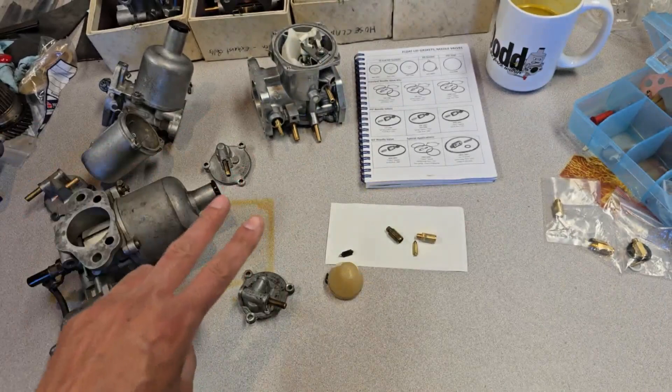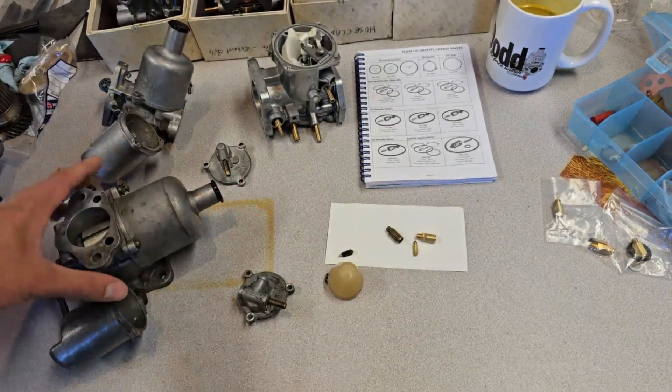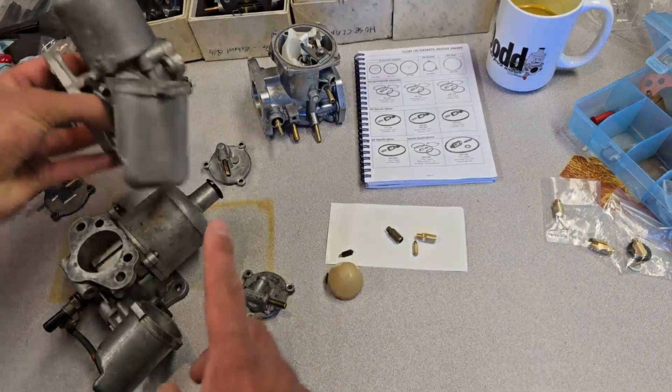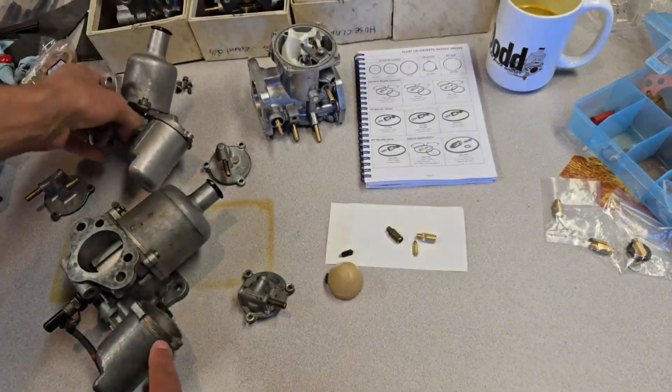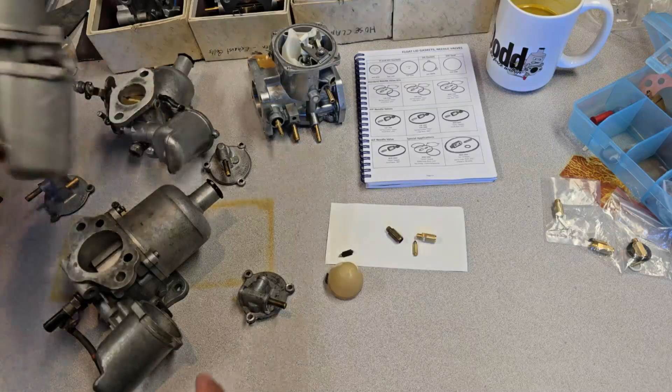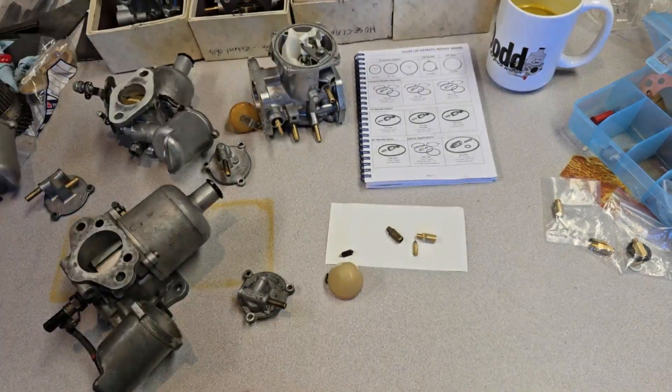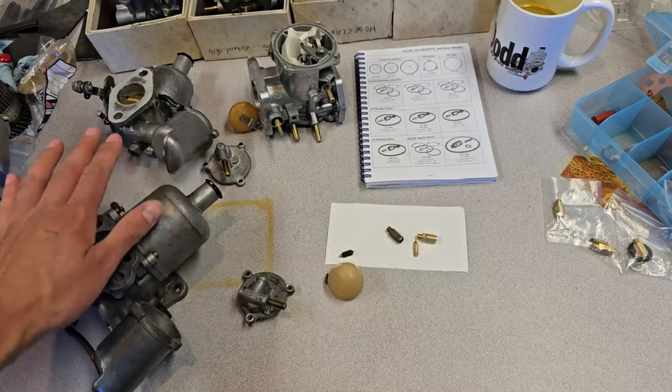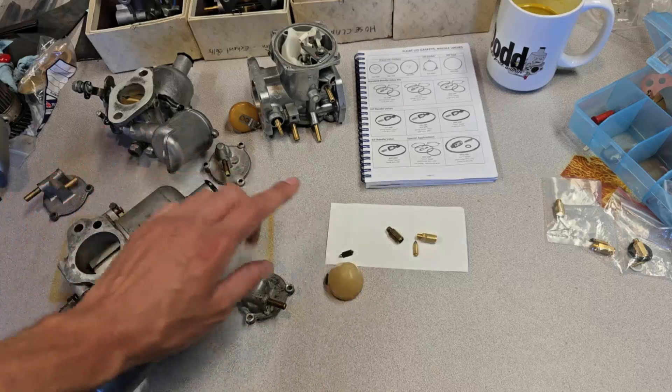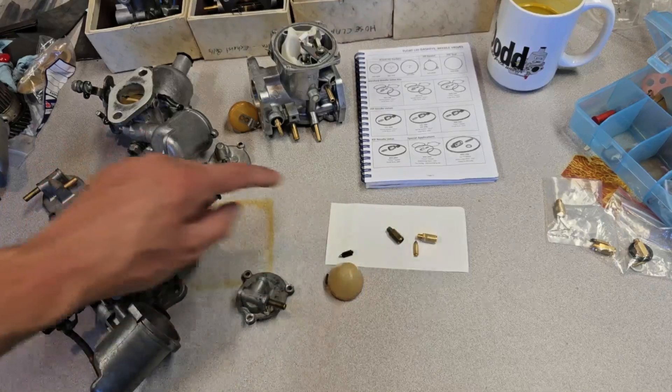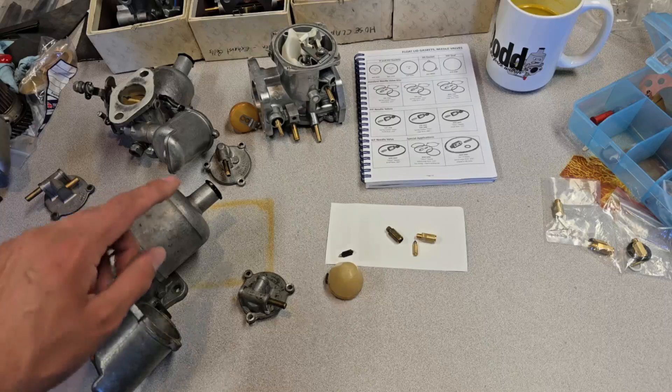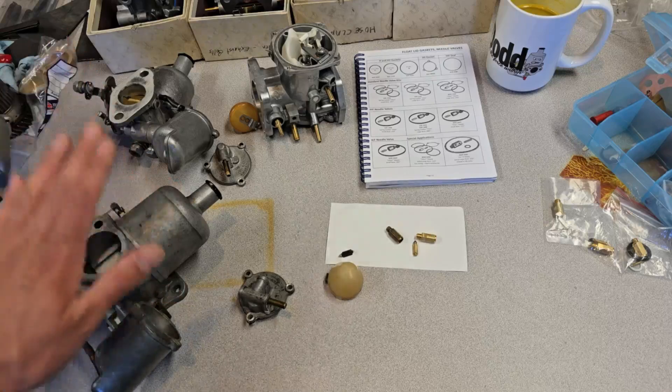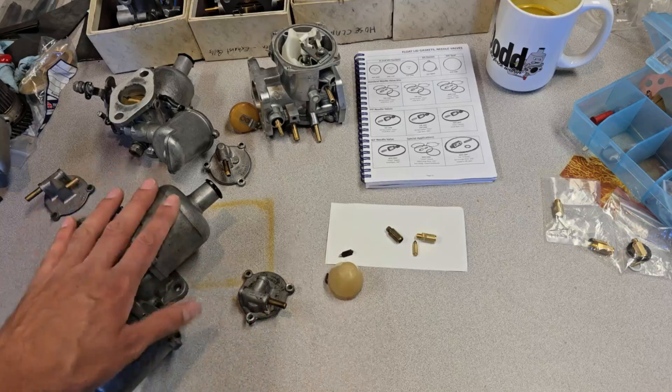So next problem, problem number two, too much fuel pressure. All of the HS carburetors, so S for side float, this is an HS2, this one's an HS6, this one here is an HS4. All of the HS type carburetors need 1.25 pounds of fuel pressure max. No more pressure than that. If you have more than that, then you start running the risk of the valve in the carburetor not being able to stop the fuel from flowing. It's just that simple. Don't have too much pressure running through your fuel system. Otherwise, the fuel will just leak through the overflow. So that's problem number two.